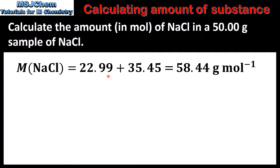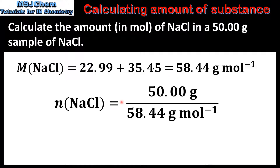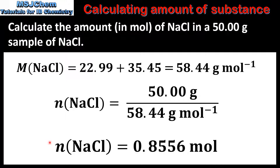To determine the molar mass of sodium chloride we add the relative atomic mass of sodium and chlorine, which gives us 58.44 grams per mole. Next we divide the mass by the molar mass, and this gives us an amount of sodium chloride of 0.8556 moles.